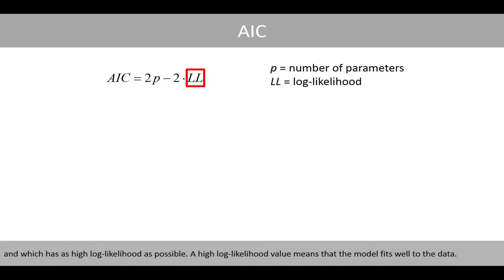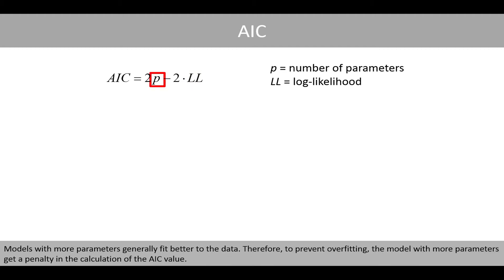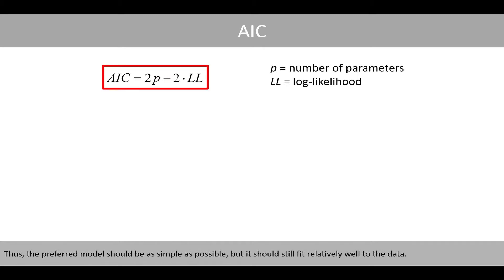A high log likelihood value means that the model fits well to the data. Models with more parameters generally fit better to the data. Therefore, to prevent overfitting, the model with more parameters gets a penalty in the calculation of the AIC value. Thus, the preferred model should be as simple as possible, but it should still fit relatively well to the data.